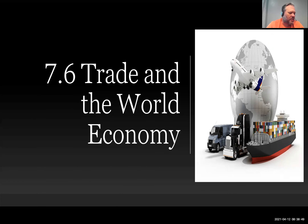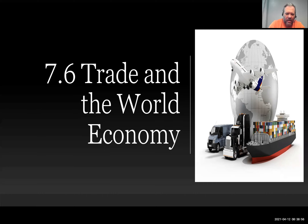So 7.6, coming close to the end of Unit 7 — there are only eight sections altogether. This section looks at trade and the world economy, specifically how goods tend to flow around the world and some of the issues that surround that.